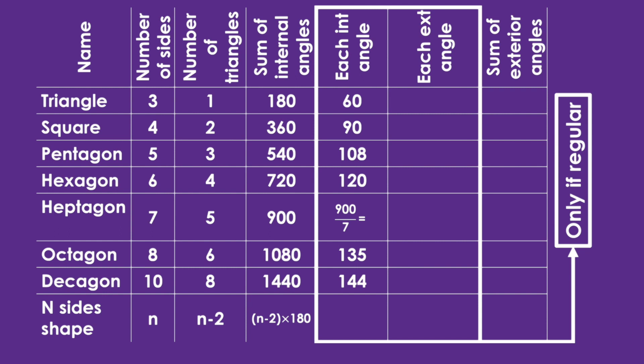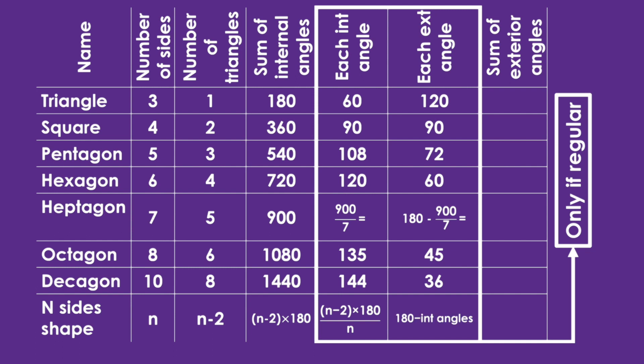For regular shapes, we can calculate each individual interior angle by dividing the sum by the number of sides, giving the formula: interior angle = (n − 2) × 180 ÷ n. From angle facts, the interior and exterior angles together form a straight line, so they add up to 180 degrees. Subtracting the interior angle from 180 gives the exterior angle of a regular polygon. This gives us two ways to work out interior angles: either through the formula, or by subtracting the exterior angle from 180.